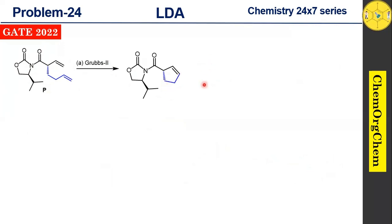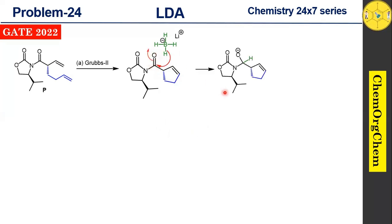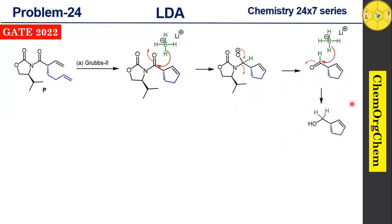The next reaction condition is lithium borohydride, which acts as a reducing agent. A hydride ion attacks the carbonyl carbon, and the electrons shift toward the oxygen atom, producing a tetrahedral intermediate. The electrons then facilitate the elimination of the Evans chiral auxiliary unit, producing a corresponding aldehyde intermediate. This aldehyde intermediate reacts again with lithium borohydride to produce the corresponding alcohol product Q.